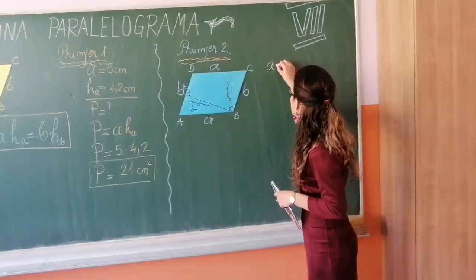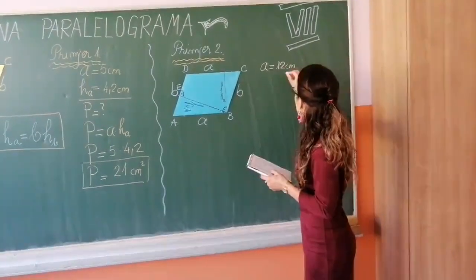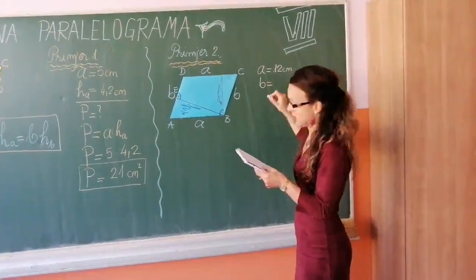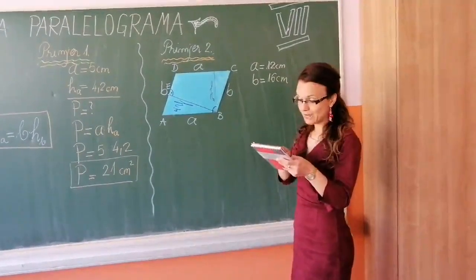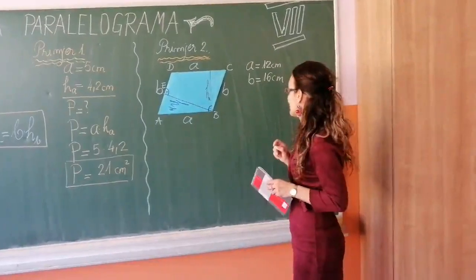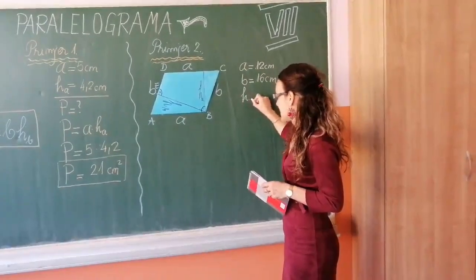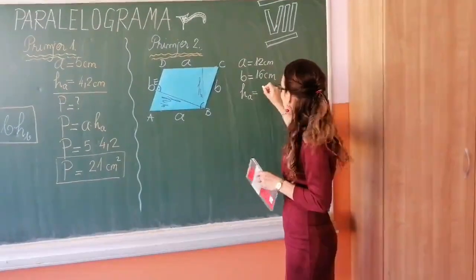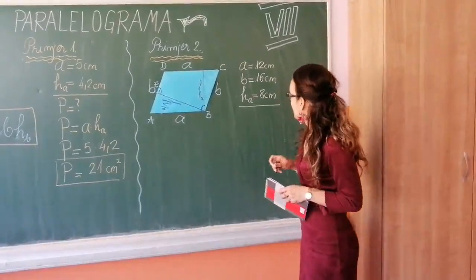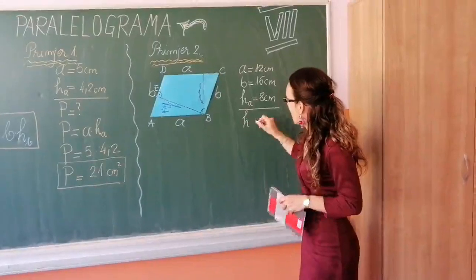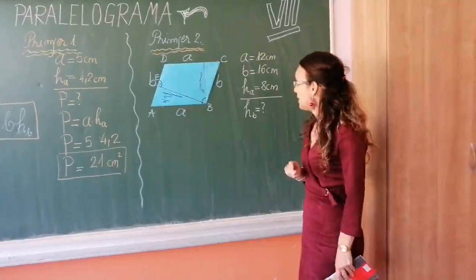Znači, imamo obje poznate stranice. Pa hajdemo prvu označiti sa A, 12 centimetara, a drugu sa B, 16 centimetara. Ali ovdje sad paziti. Prvoj stranici odgovara visina dužine 8 centimetara. Moja prva stranica je malo A. Znači, ja ovdje sad moram napisati ha je 8 centimetara. A zadatak je odrediti vrijednost visine koja odgovara onoj drugoj stranici. Znači, hb jednako je upitnik.